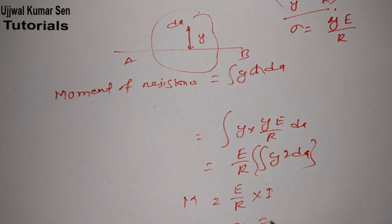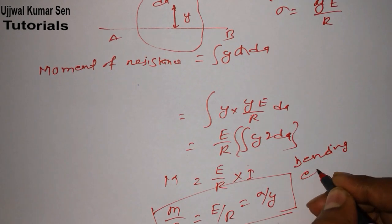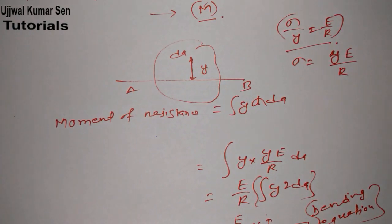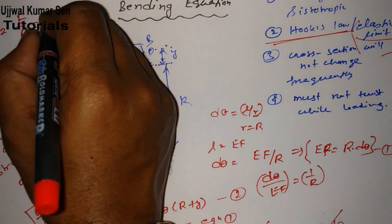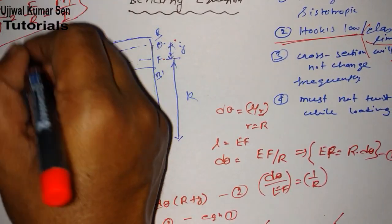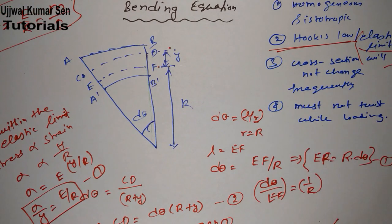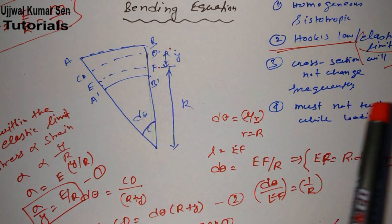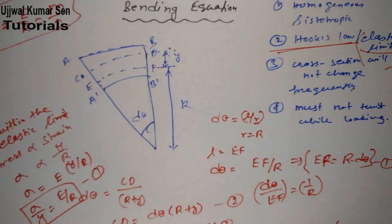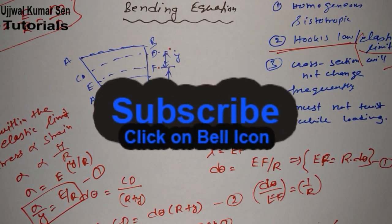And since E/R = σ/y, we have the complete bending equation: M/I = σ/y = E/R. This is the bending equation, and it took only about 9 to 10 minutes to derive. The most important things are the diagram and the assumptions — without the assumptions you cannot derive the equation. I hope you understand. Let me know your thoughts in the comments. Thanks for watching — see you soon in my next video!